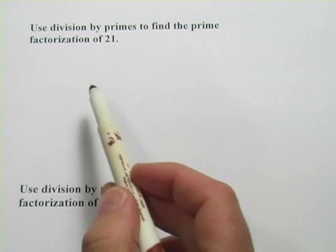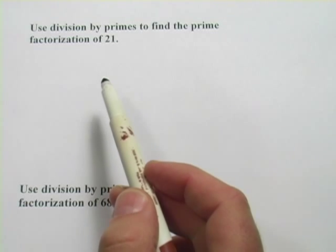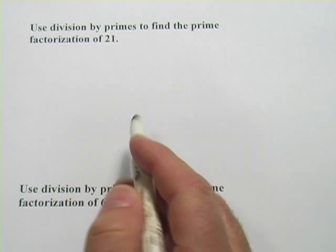In these problems we are finding the prime factorizations of numbers using this technique called division by primes. The way I like to do this is with something called upside down division.